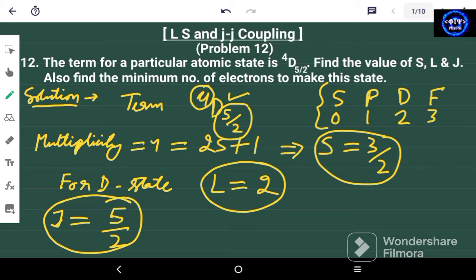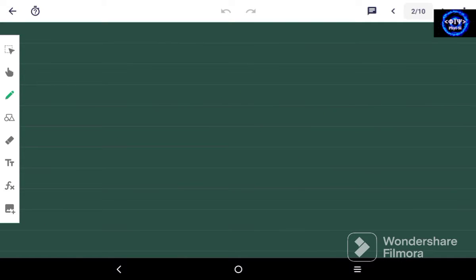Now we also have to find the minimum number of electrons to make this state. So for a minimum number of electrons, we have capital S is equal to 3/2. Now, how can we get 3/2?